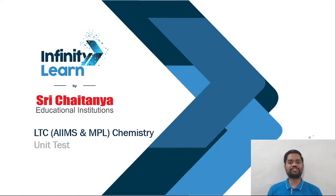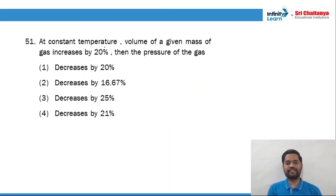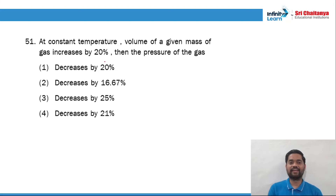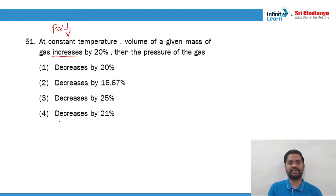The first question that you attempted was: at a constant temperature, the volume of a given mass of a gas increases by 20%, then the pressure of the gas is? At constant temperature, that means we are talking about Boyle's law. First, pressure is inversely proportional to volume, and that's why for an increase, if you see, all the options are in decreases.